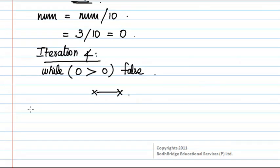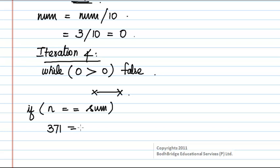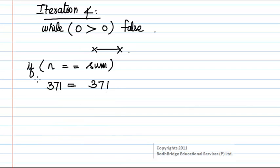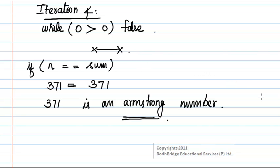At the end of the loop, we check if the value stored in the temporary variable equals the value stored in sum. The initial number given by the user was 371, which equals the final value of sum. So these two values are equal and the output '371 is an Armstrong number' is printed. This is the logic of the program.